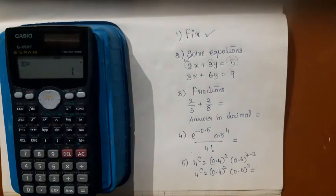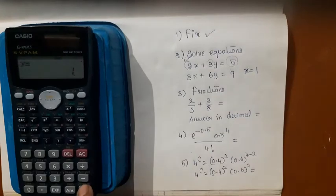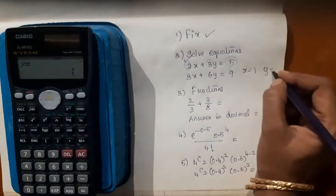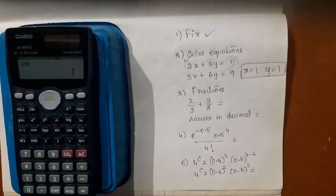Now it has started giving you the answers. So write: x is equal to 1. Again press equal to, it will give the answer for y, that is also equal to 1 in this case. This is how you should use this calculator to solve the equations.